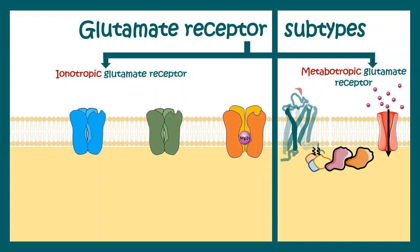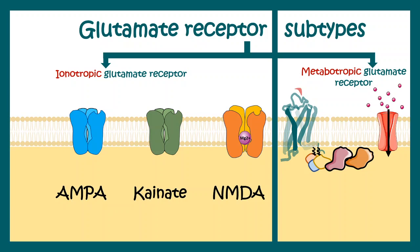Under ionotropic glutamate receptors, we can see AMPA receptors, kainate receptors, and NMDA receptors. All these nomenclatures are done based on the agonist of these ion channels. There are also metabotropic receptors, which are specific G-protein coupled receptors. They work using several second messengers and intermediate players, and these are referred to as mGluRs. If you want details about metabotropic and ionotropic receptors and how they work, you can quickly get it in the I button.